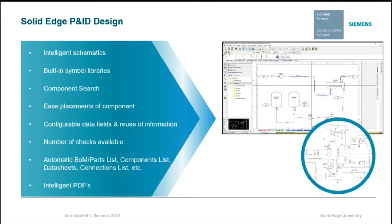With a quick component search tool, we can easily find components and place them within the design. All these features allow the design engineer to focus on the design and are a big time saver. The software also offers configurable data fields and the option to reuse information. Output files include automated bill of materials, part lists, component lists, data sheets, connection lists, etc. This data can then be saved into intelligent PDFs, which can be shared.